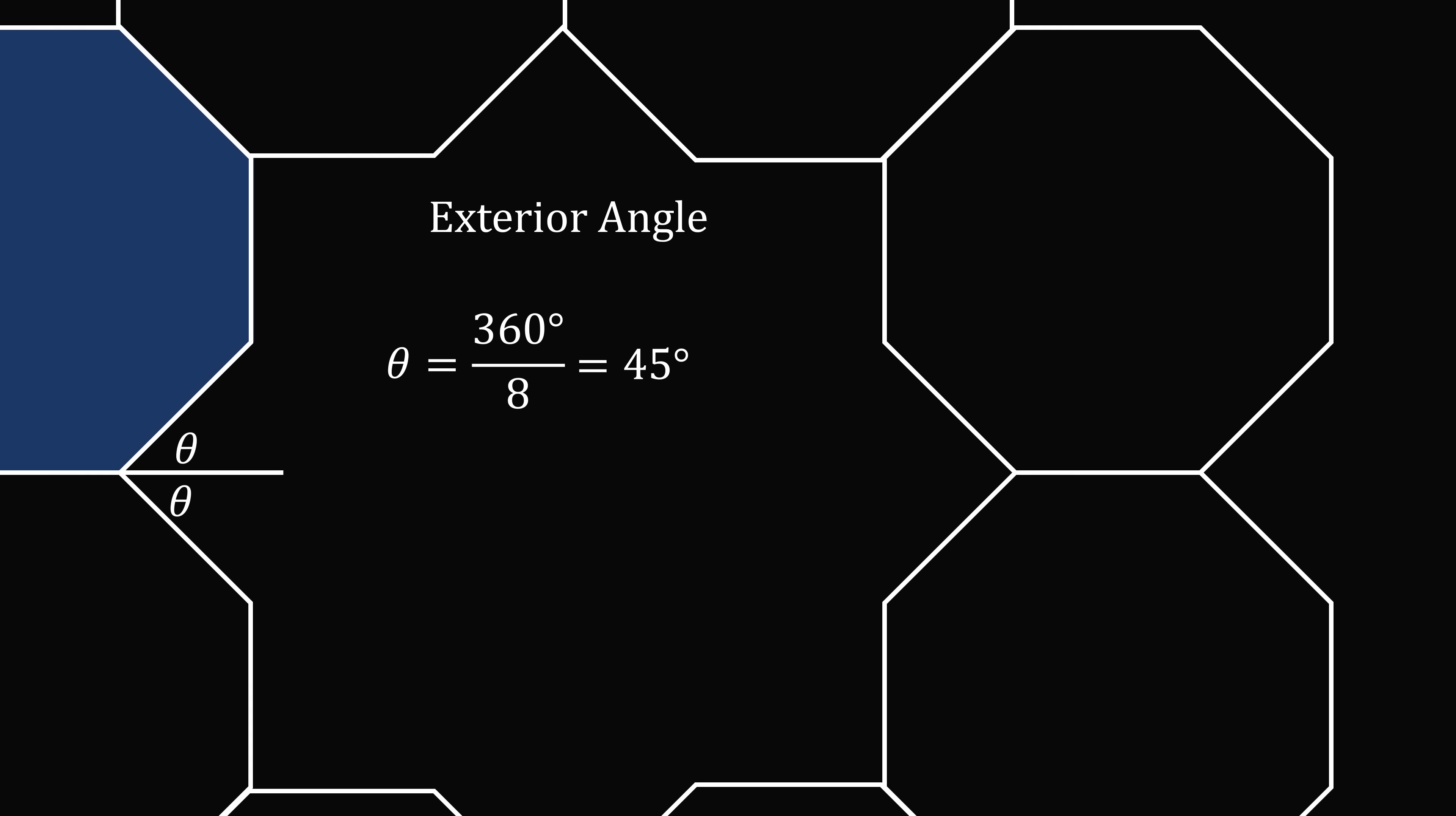Now, we also have an exterior angle here. So the angle between two octagons is equal to 2 theta, and that's equal to 90 degrees. So every pair of octagons meet at a 90 degree angle.